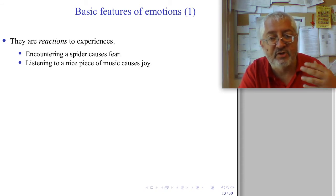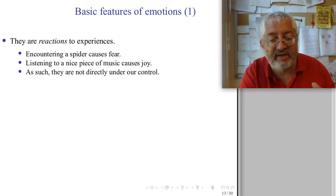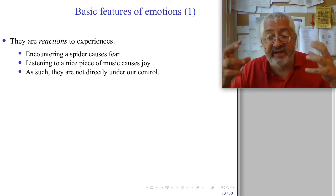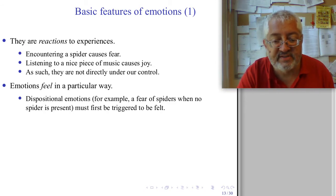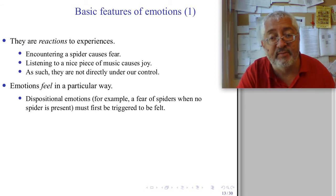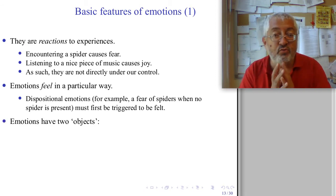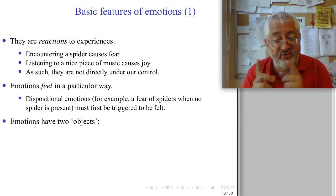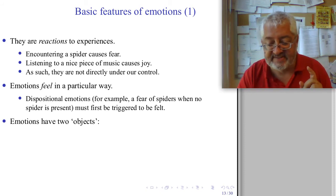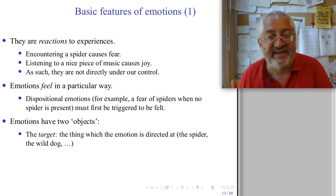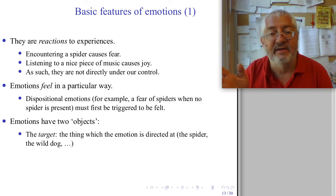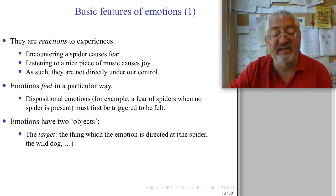Emotions are reactions to experiences — my fear is a reaction to seeing a spider, listening to nice music causes joy. As such, they are not directly under our control because they are triggered by the experience. Emotions feel in a particular way; dispositional emotions must first be triggered to be felt. And importantly, emotions have two objects. First, they have the target — the thing the emotion is directed at, the immediate target. If I'm attacked by a wild dog, the target is the dog.